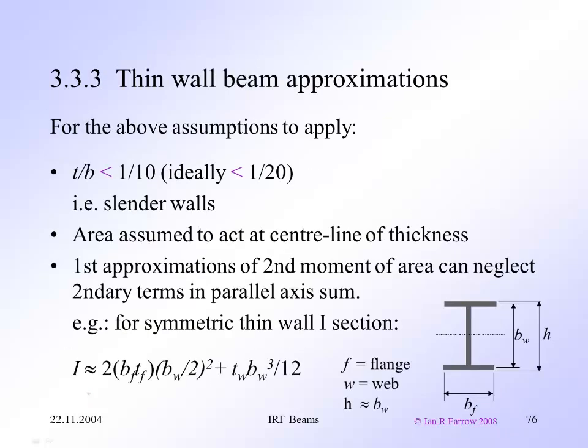For those assumptions to apply, you want a thickness to length of the wall less than 1 in 10, ideally 1 in 20. So we call this slender. The area of the section can be assumed to act at the center line of the thickness. And the first approximation of the second moment of area can neglect secondary terms in the parallel axis sum.